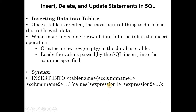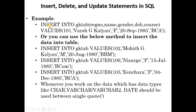For example: INSERT INTO jk_tab (register_number, name, gender, date_of_work, course) VALUES (101, 'J Kalani', ...). The value 101 is inserted into the register_number column of the first row, and 'J Kalani' is inserted into the name column of that same row, and similarly for all other columns.